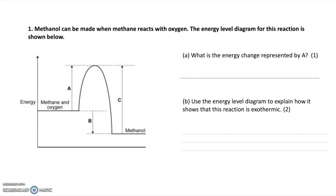Let's look at how to answer this first exam question. The question says methanol can be made when methane reacts with oxygen, and the energy level diagram for this reaction is shown below. This is an energy profile diagram and it shows the energy that the molecules of reactants and products have during the course of a reaction. Energy change A is the activation energy — that's the minimum amount of energy required for a reaction to start. You get one mark for that.